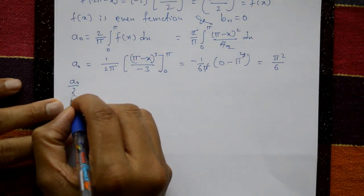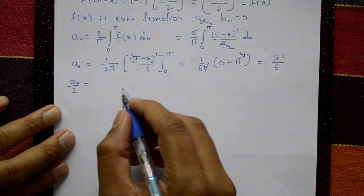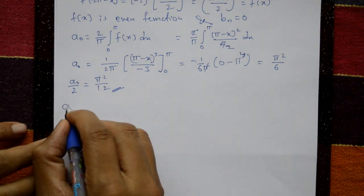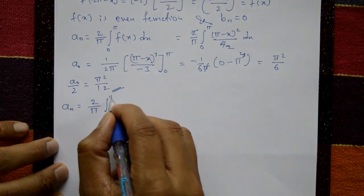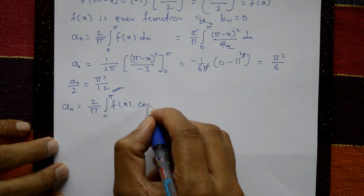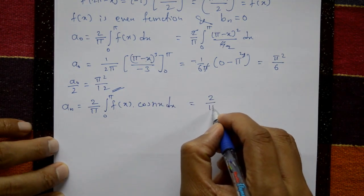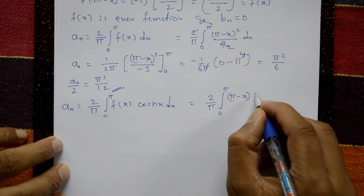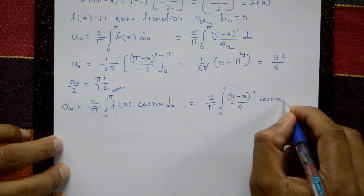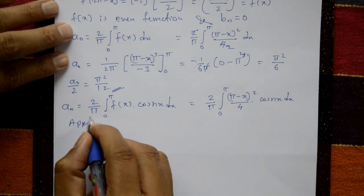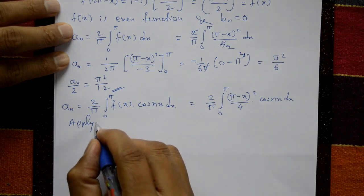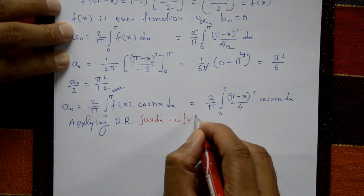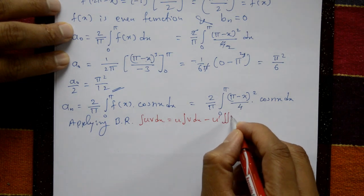Next, aₙ equals 2 by π, integration from 0 to π of f(x) cos(nx) dx. Substituting f(x) = (π minus x)² by 4, the 2 cancels giving 1 by 2π times integration of (π minus x)² cos(nx) dx. Applying Bernoulli's rule for polynomial times trigonometric function: integral of u·v dx = u·∫v dx minus u'·∫∫v dx dx plus u''·∫∫∫v dx dx dx, and so on with alternating signs.